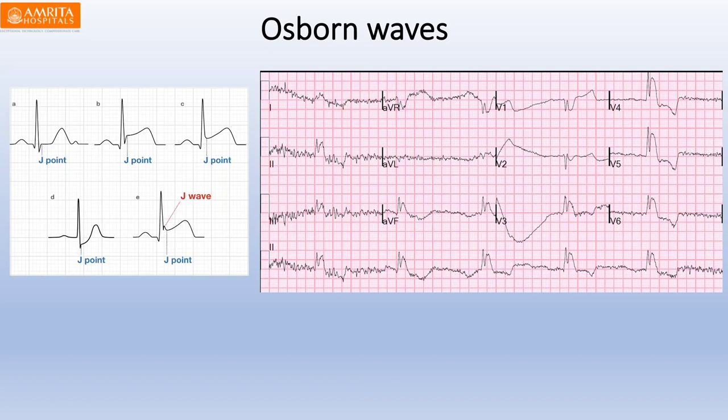This is the classical ECG representation showing the Osborne wave — you can see the J-point elevation — which is a characteristic ECG finding seen in hypothermia.